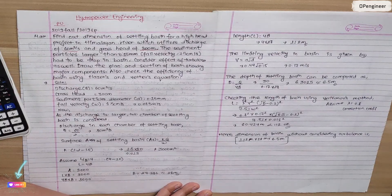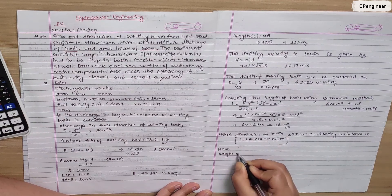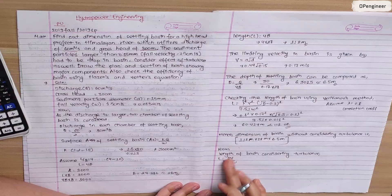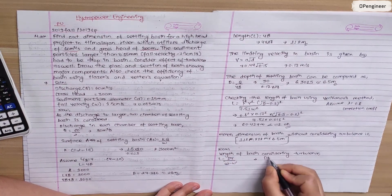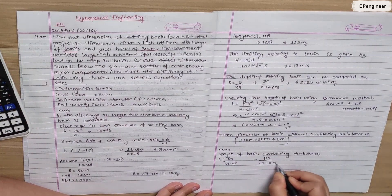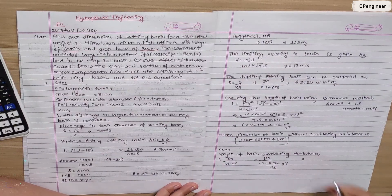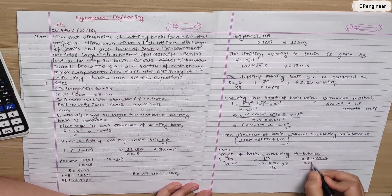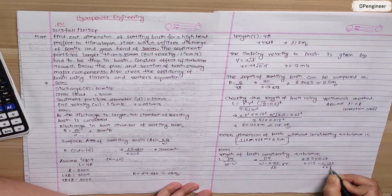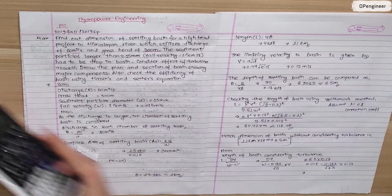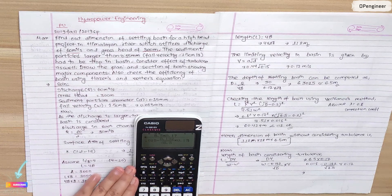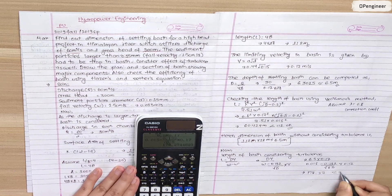Now we consider the effect of turbulence. The length of the basin considering turbulence is given by L equals d times V divided by (omega minus omega dash), where omega dash equals 0.132 times the square root of (d times V). Substituting depth 6.5 m, velocity 0.17 m/s, and omega 0.015 m/s: L equals 6.5 times 0.17 divided by (0.015 minus 0.132 times square root of (6.5 times 0.17)), giving approximately 178.27, rounded to 179 meters.